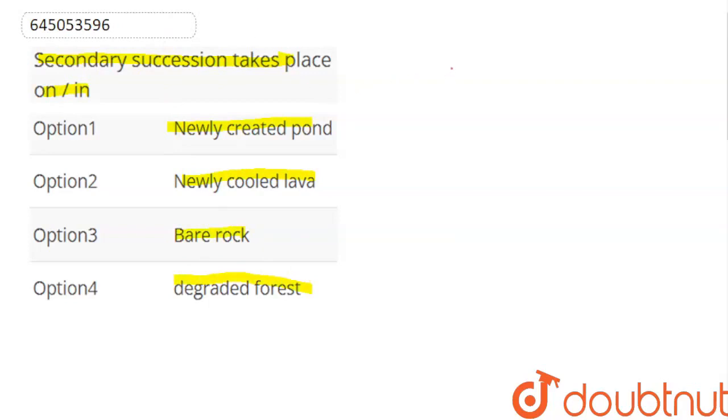So, if we discuss our question, succession is of two types. One is primary succession, while the other is secondary succession.